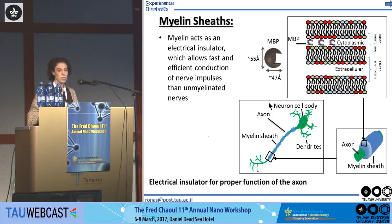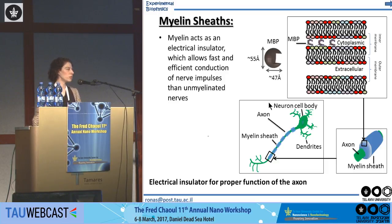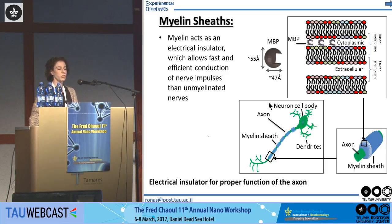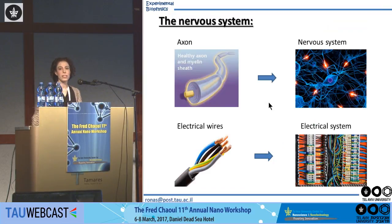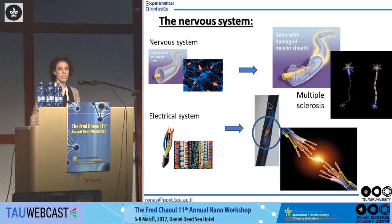Myelin acts as an electrical insulator, speeding up nerve conduction and also nurtures the axon. The axon is the long slender projection of a neuron that typically conducts electrical impulses away from the neuron cell's body. Its function is to transmit different information to different neurons and muscles. You can think of that as an electrical wire — in order to get good conduction, the wire should be insulated.